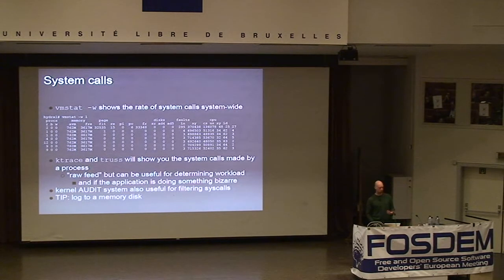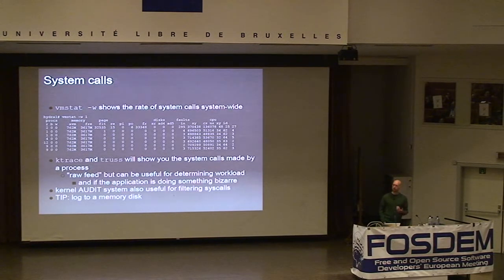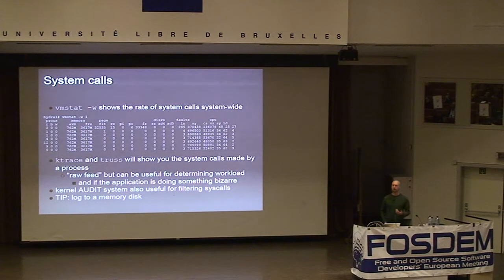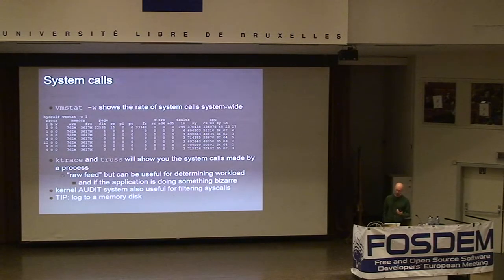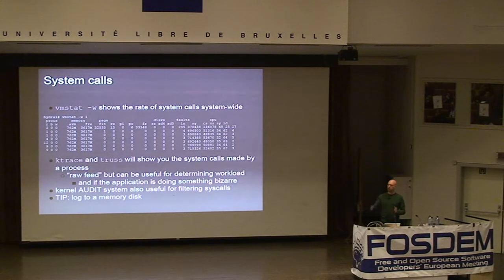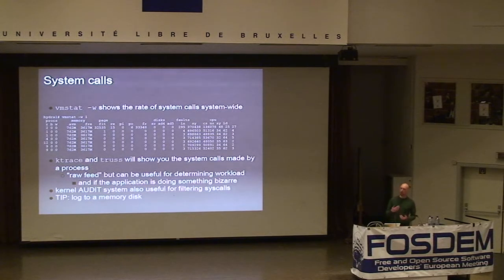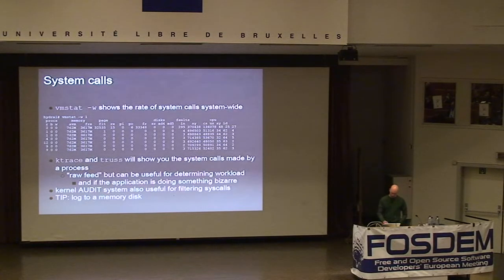Another interesting way of studying how processes interact with the kernel is using the audit subsystem, which has been present since around FreeBSD 5 and is probably not very well known. It's intended partly as an audit trail facility for secure logging of process activities such as logins, but it can be configured to do very fine logging of process activities including each syscall with its arguments. With this high-volume data flow, you want to try to log to a memory disk to avoid the I/O slowing down the process.